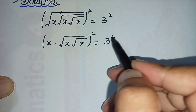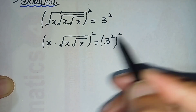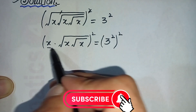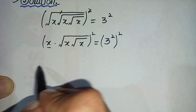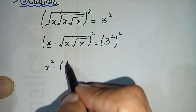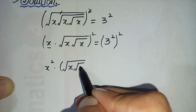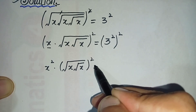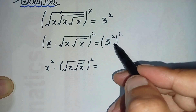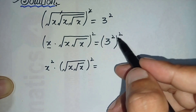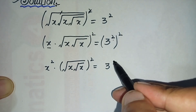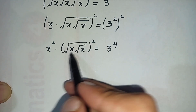Again we take square on both sides. On the left-hand side there are two terms: x and square root of x times square root of x. The square is applied to both terms. We use the exponential property: a raised to power m, whole raised to power n, equals a raised to power m times n. So we multiply the powers with each other.